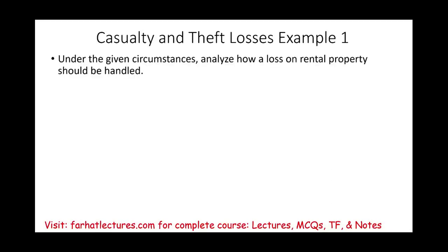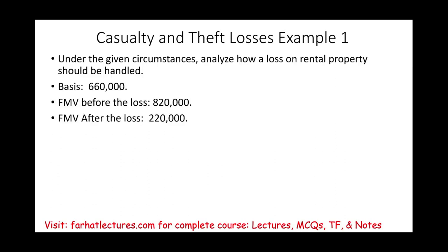Under the given circumstances, analyze how a loss on rental property should be handled. We have a rental property — a building — with a basis of $660,000. The fair market value before the loss was $820,000, and the fair market value after the loss is $220,000. There was some sort of a casualty loss on this — a tornado, a flood, it doesn't really matter. How do we compute the loss?